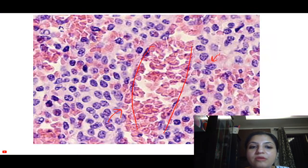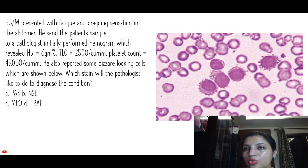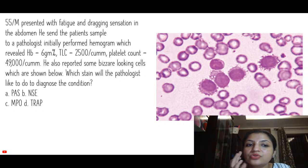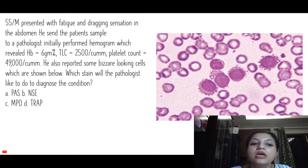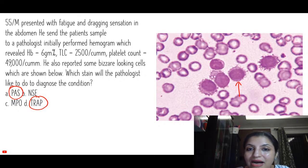To recap the case: this is a 55-year-old male presenting with massive splenomegaly and dragging and fatigue sensation. The patient sample sent to the pathologist shows pancytopenia. Remember, sometimes they give you monocytopenia or atypical mycobacteria infection as a clue to hairy cells. If you see these bizarre-looking cells, those are hairy cells, and you should put up a special stain which is TRAP — today we are focusing on two stains: PAS and acid phosphatase.